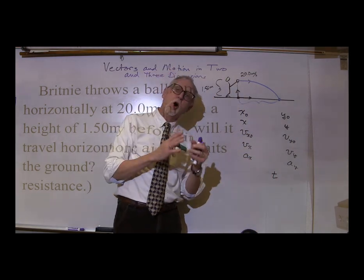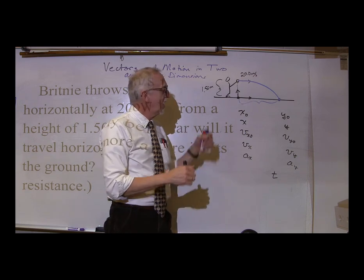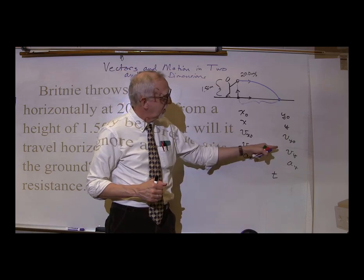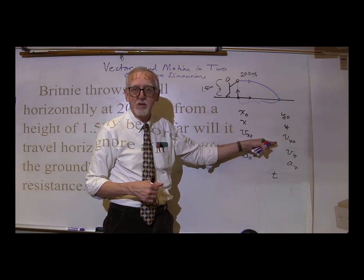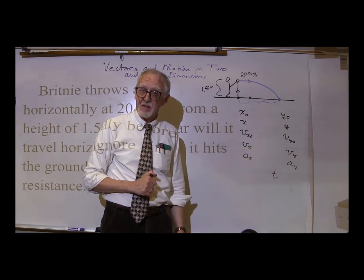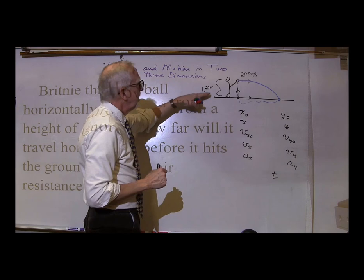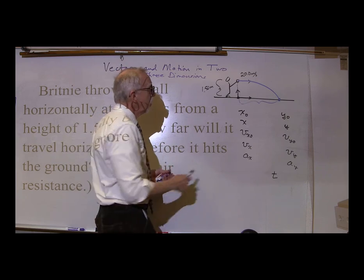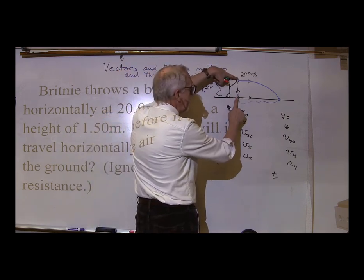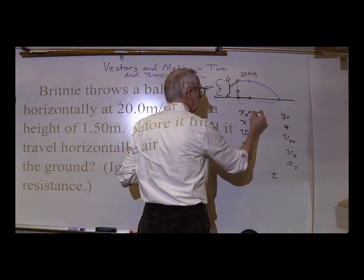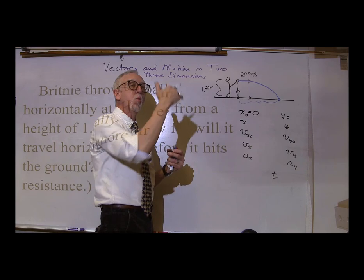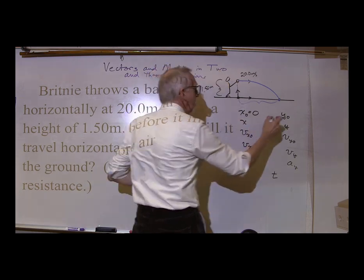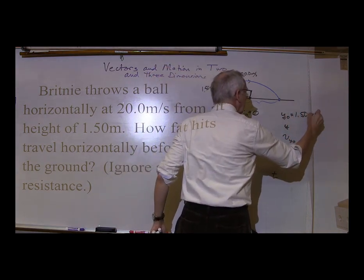Now, what do we know and what do we not know? x0 — the initial x position — looking at our diagram, the initial position is right on the y-axis, so x0 is zero. What about y0? We know it is directly 1.50 meters above the origin, so y0 is 1.50 meters.